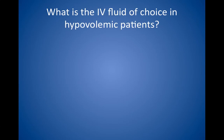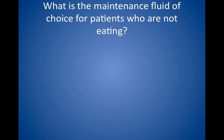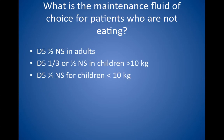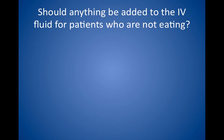What is the IV fluid of choice in hypovolemic patients? Normal saline or lactated Ringer's solution, regardless of the other electrolyte problems. First, fill the tank, then correct the imbalances that the kidney cannot sort out on its own. What is the maintenance fluid of choice for patients who are not eating? One-half normal saline with 5% dextrose is usually given in adults. One-quarter normal saline with 5% dextrose is given in children weighing less than 10 kilograms. One-third or one-half normal saline with 5% dextrose is given in children weighing more than 10 kilograms. Usually potassium chloride, 10 or 20 milliequivalents, is added to a liter of IV fluid to prevent hypokalemia, assuming that the baseline potassium level is normal.